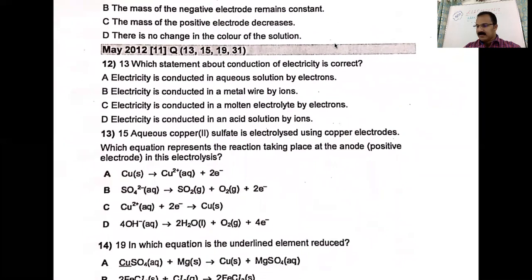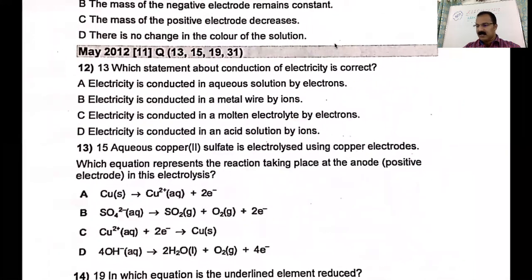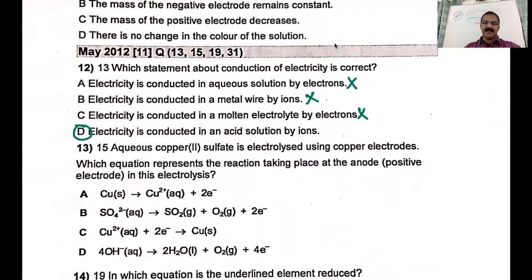Which statement about the conduction of electricity is correct? In aqueous solution, electricity is conducted by ions, not electrons. Electron conduction occurs only in metals and in graphite. In a metal wire, it is by electrons, not ions. In a molten electrolyte or acid solution, conduction is by ions. Electricity is conducted in an acid solution by ions — acid is an electrolyte. So we choose the correct answer by ruling out the wrong ones.